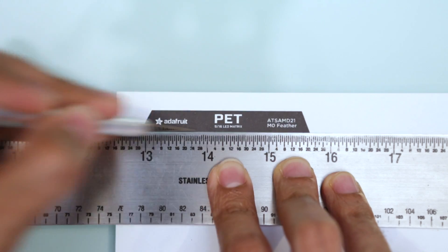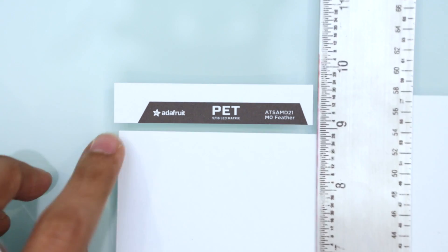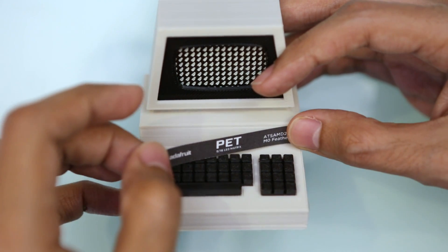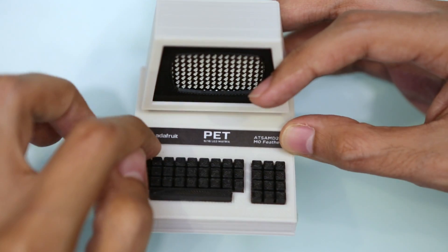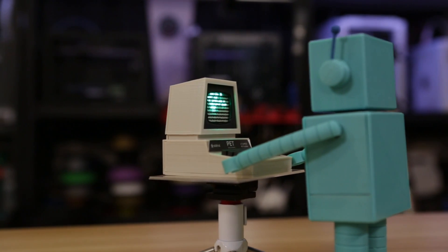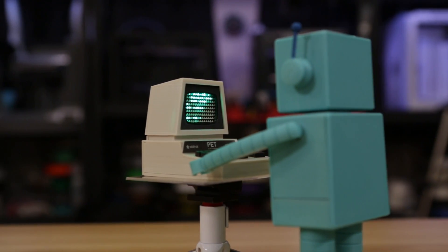Lastly, we can print the label on sticker paper and crop it out. This is totally optional, but it really adds those final details to the project. And there you have it, a retro inspired mini Commodore PET.